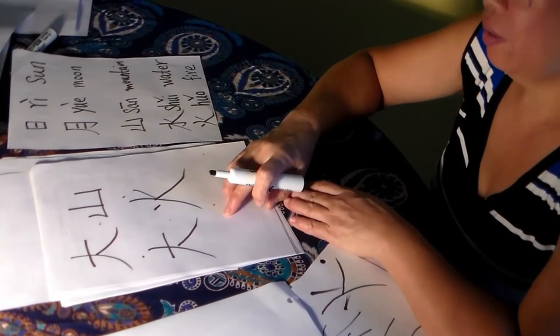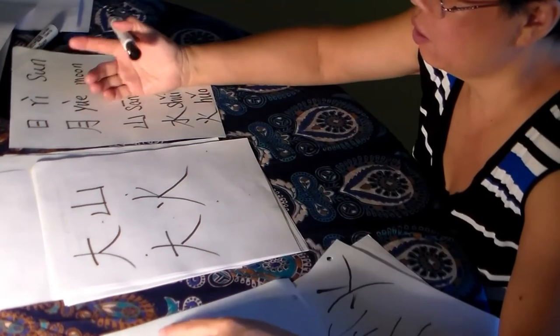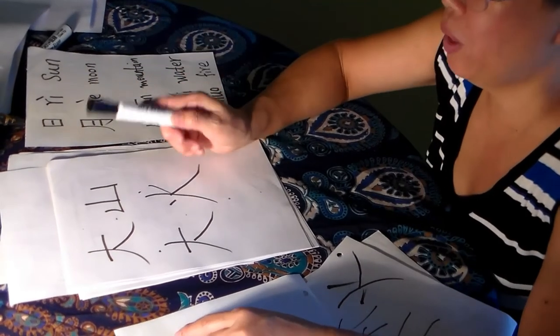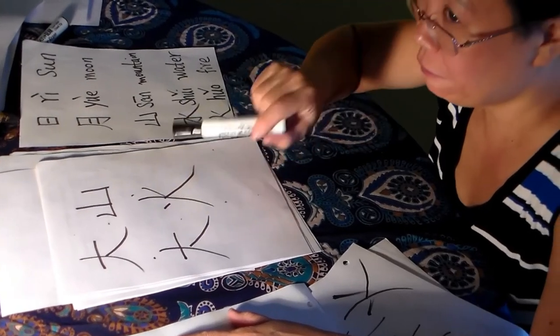Da huo, big fire, big fire. Okay, so today, you know, the Chinese, you put the two Chinese words together can be a sentence. So today we learn simple, da shan, da huo, big mountain, big fire, huge fire. Done.